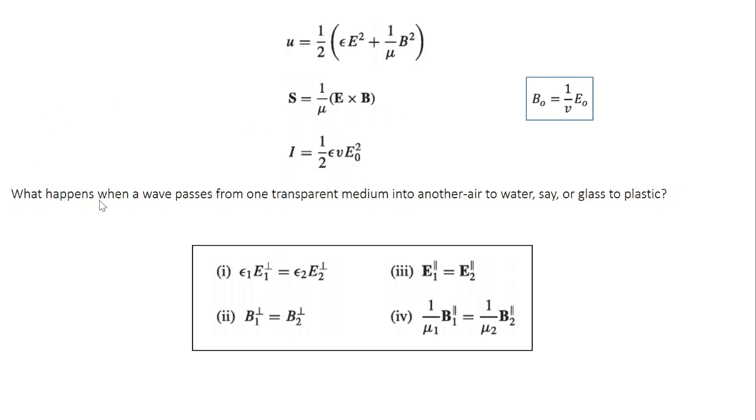The question is, what happens when a wave passes from one medium into another? For example, from air to water or from glass to plastic, what happens? So just like the case of a transverse wave traveling from one string to another string, the electromagnetic wave also is going to undergo reflection and transmission. A part of the wave is going to get reflected and the remaining part is going to get transmitted.